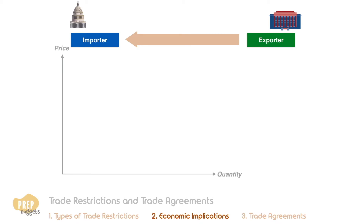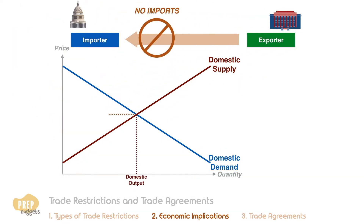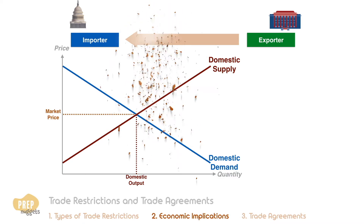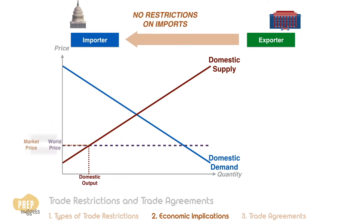In a free market, there is always a demand and supply curve. Without imports, the market equilibrium output and price of the good will be at this point. However, if imports are allowed without restrictions, the market price will take the world price for the good.